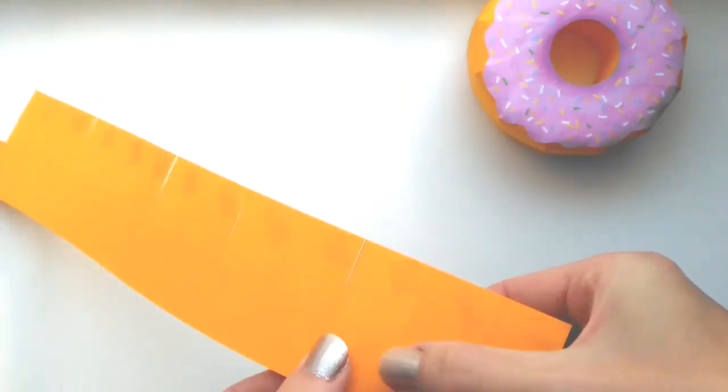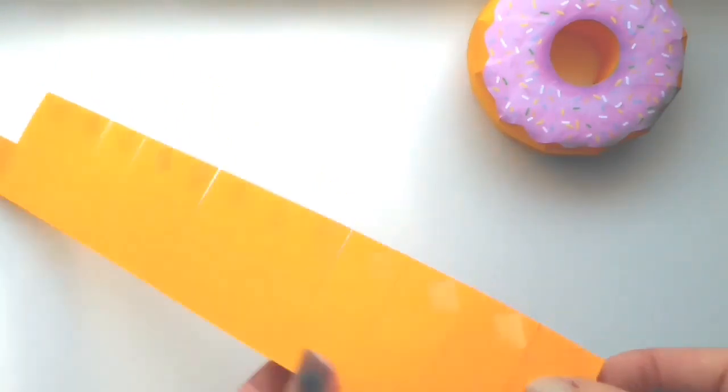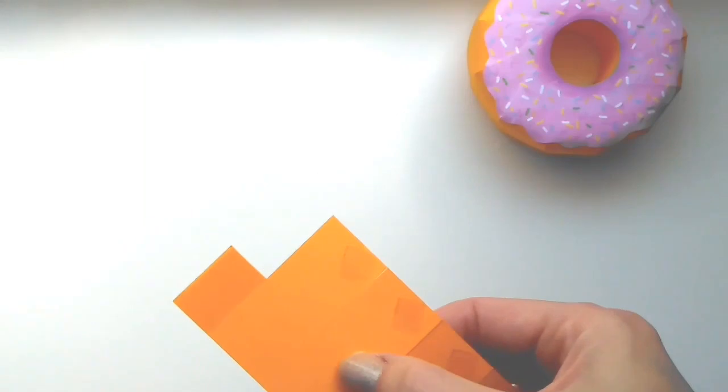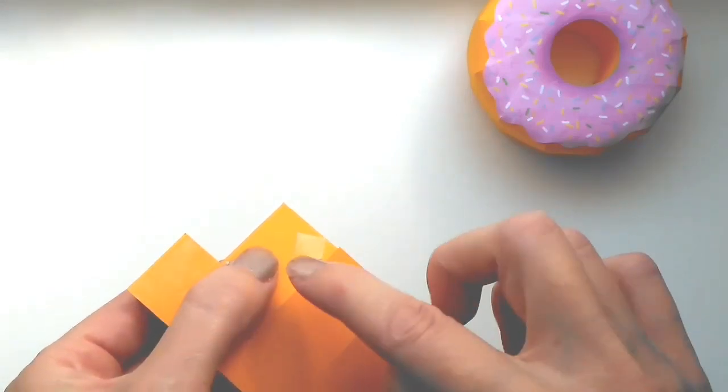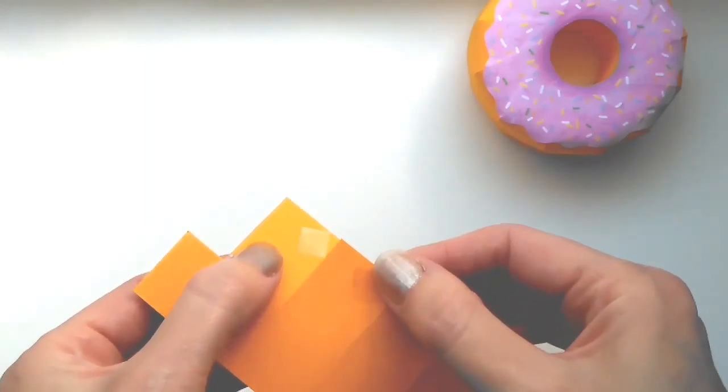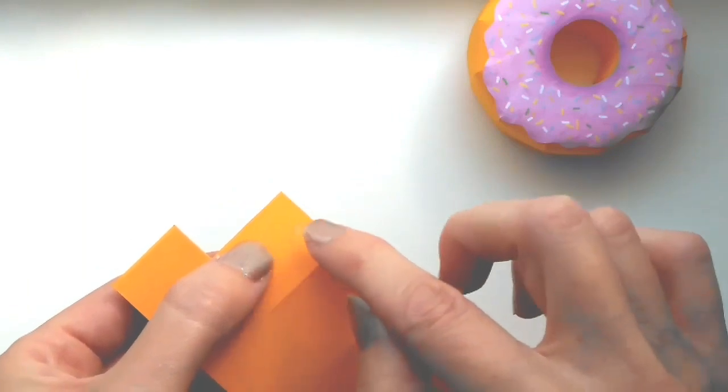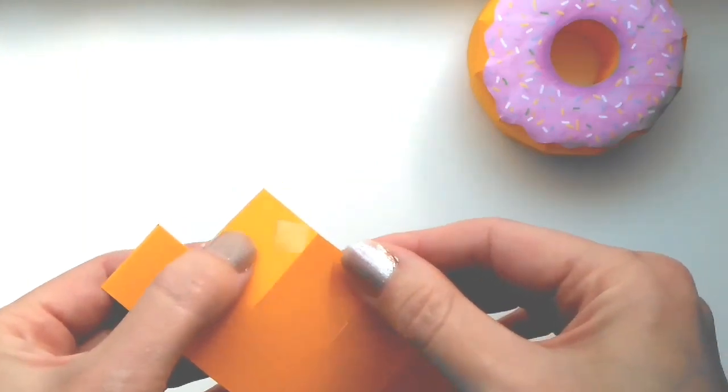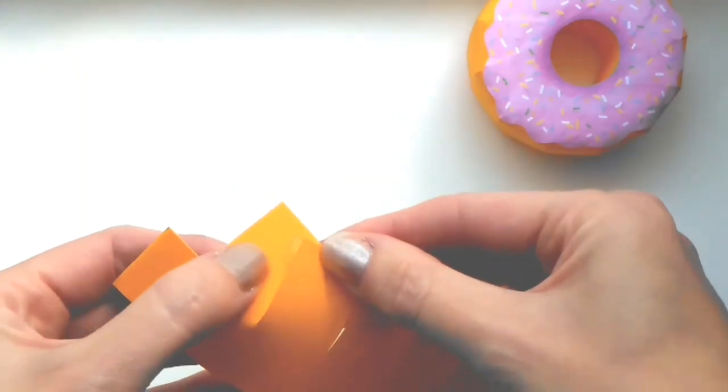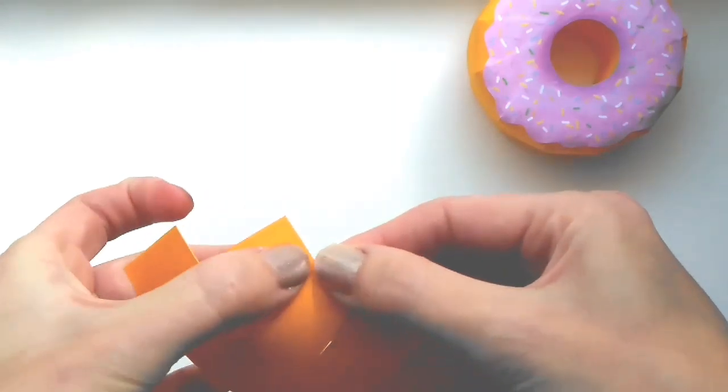And then I've just got some double-sided tape on these. It will show you on the template where to put it, and then you just carefully line up each section and push it down.